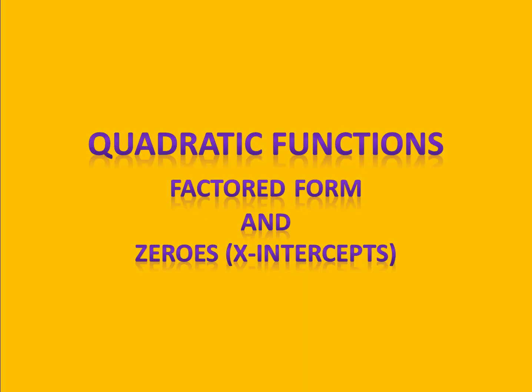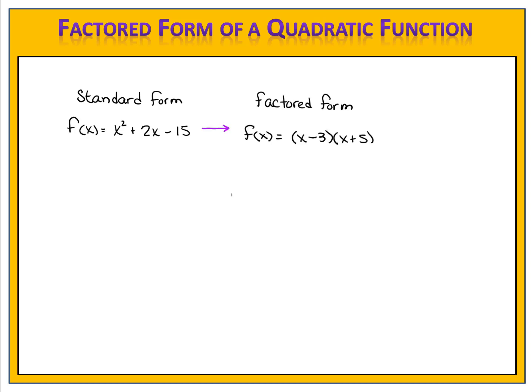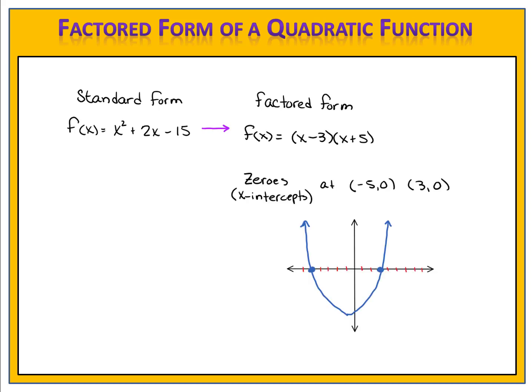In this lesson, we're going to learn about the factored form of a quadratic function. So what exactly is the factored form, and why is it important? Suppose we have a function written in standard form. We can use the rules of factoring to rewrite that function in what we call factored form. Those factors are very useful — we can use them to identify the zeros or x-intercepts of a function.